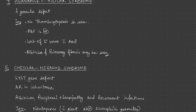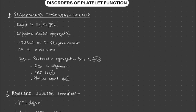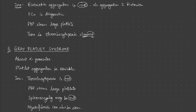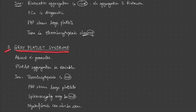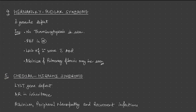That is all about platelet function disorders. To revise the names: first is Glanzmann's thrombasthenia, second is Bernard-Soulier syndrome, third is gray platelet syndrome, fourth is Hermansky-Pudlak syndrome, and fifth is Chediak-Higashi syndrome. That is all about the platelet function defects. Thank you.